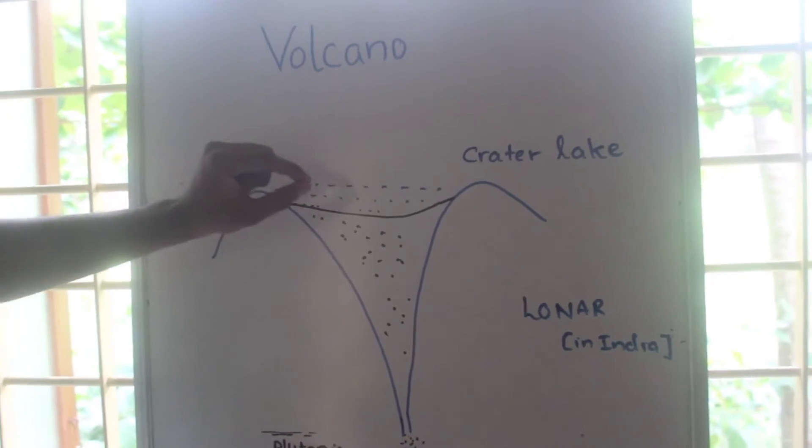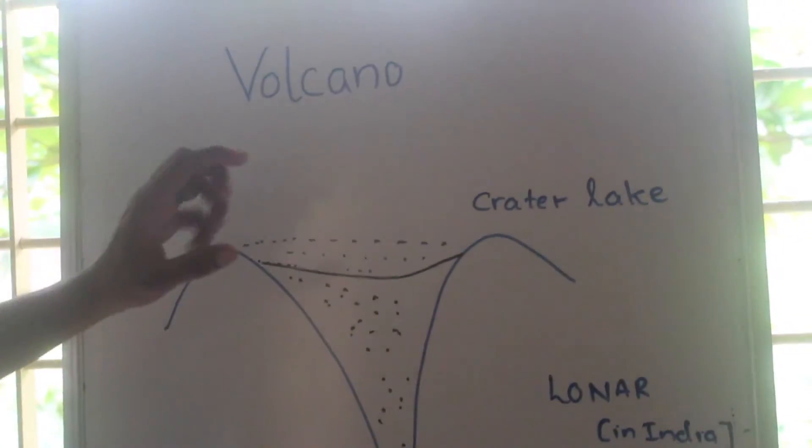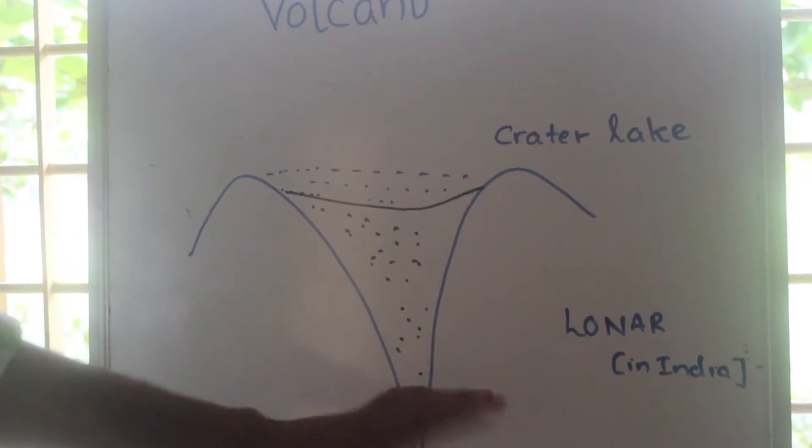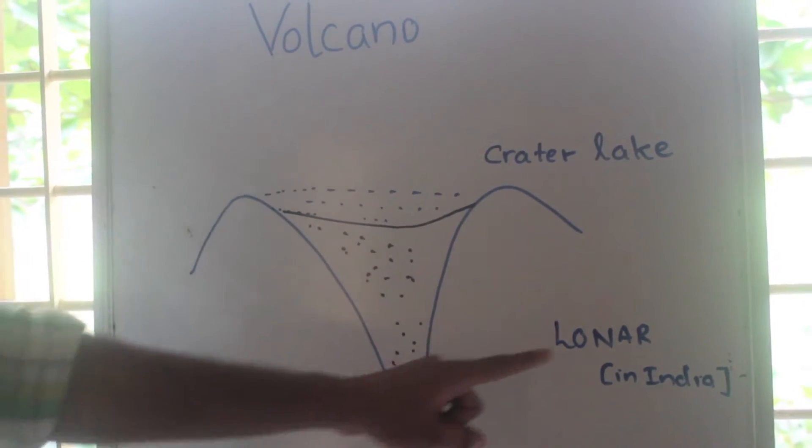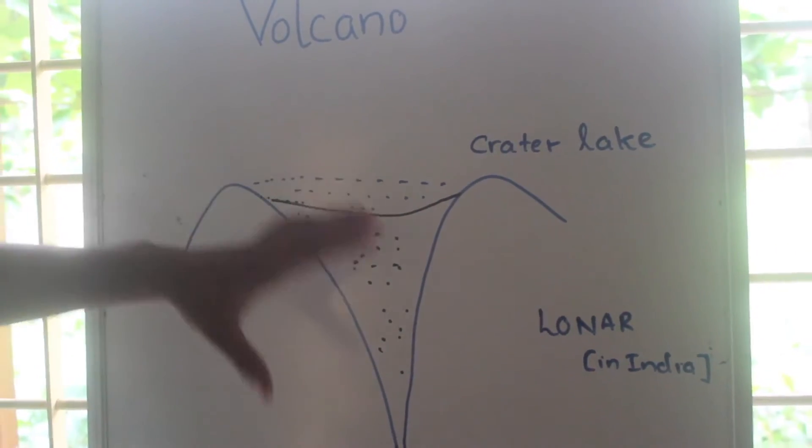That lake is called a crater lake. In India, we have a single crater lake, which is Lonar.